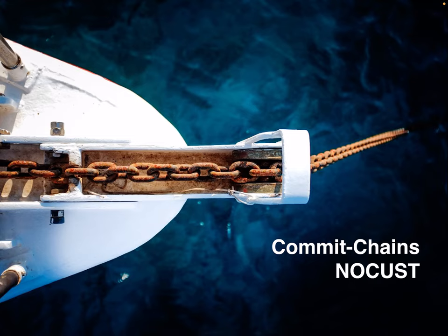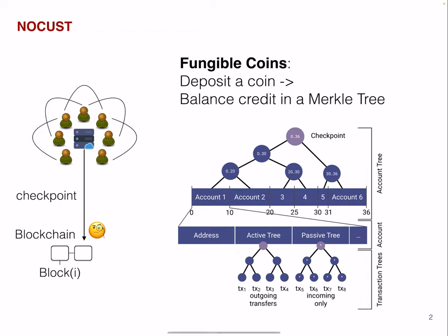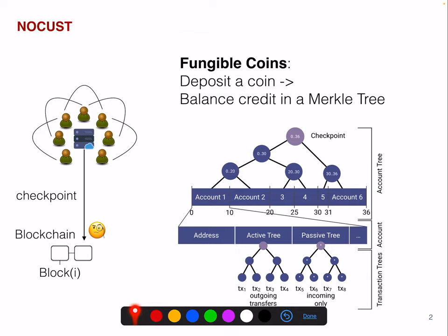Another commit chain approach that was proposed after PlasmaCache is NoCast. In NoCast, you have again the centralized operator. You have the off-chain transactions, and this operator performs a checkpoint on-chain.